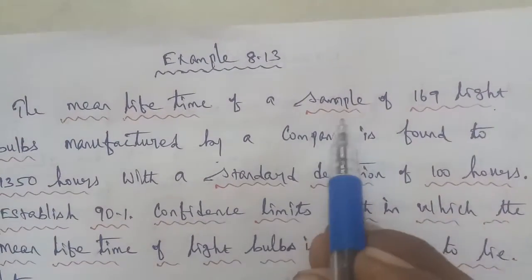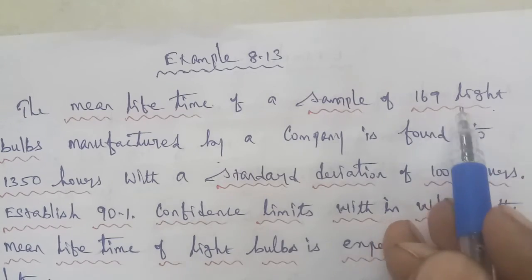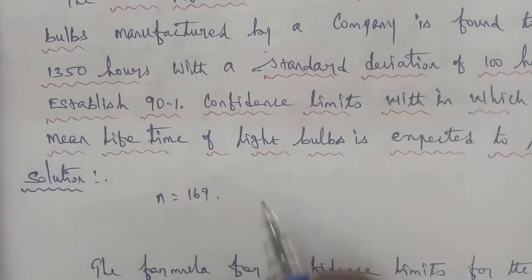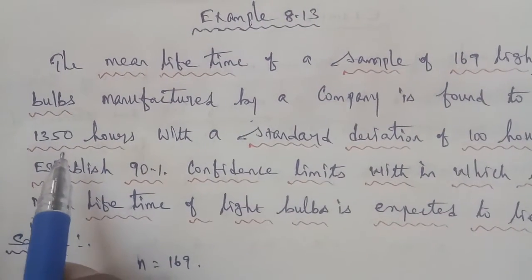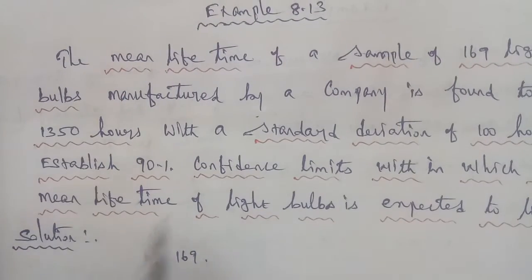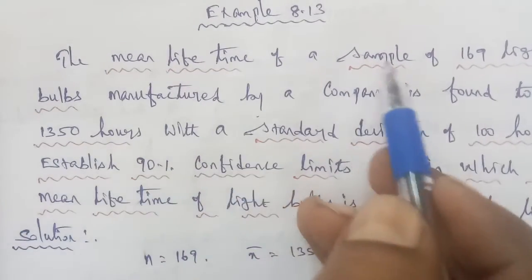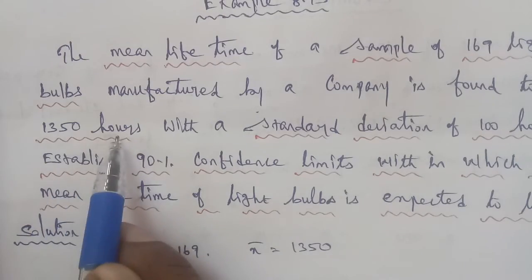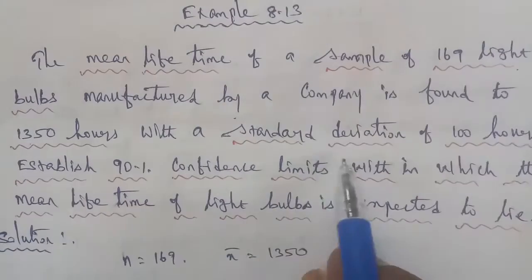In the given question, the sample of number of light bulbs is 169, so n equals 169. The mean lifetime of the sample of 169 light bulbs manufactured by the company is found to be 1350 hours, so the mean value is 1350.